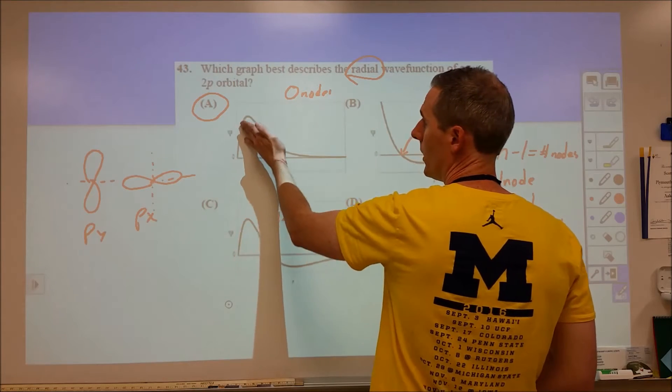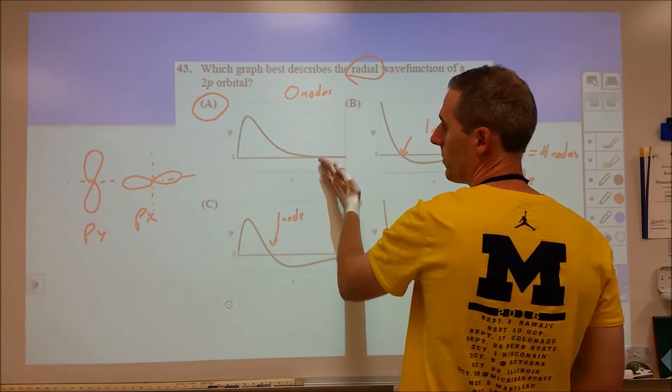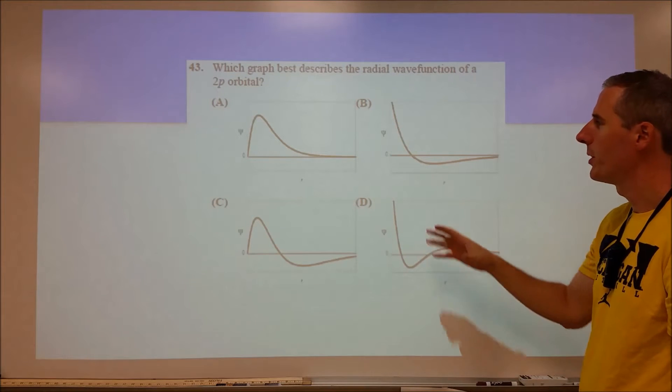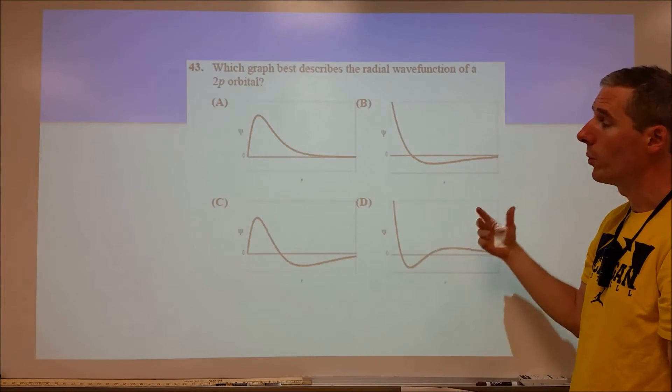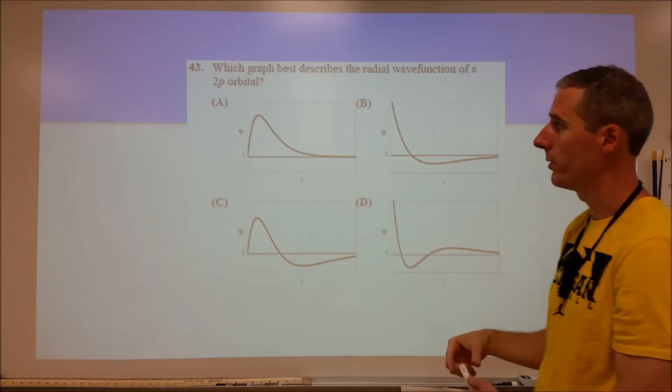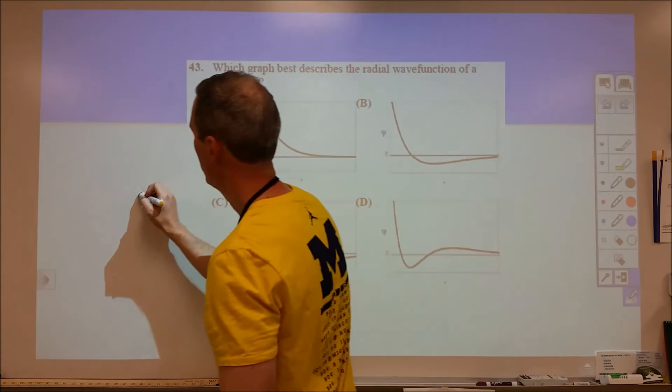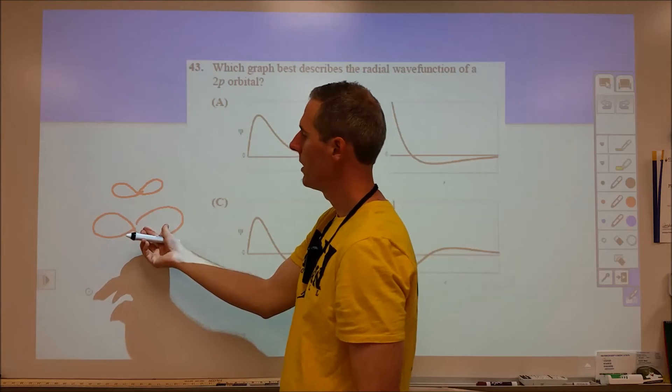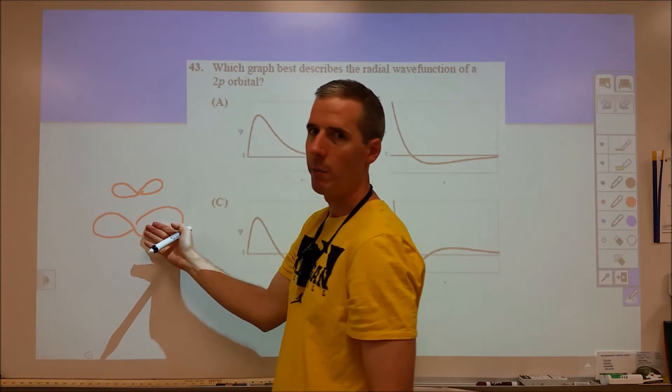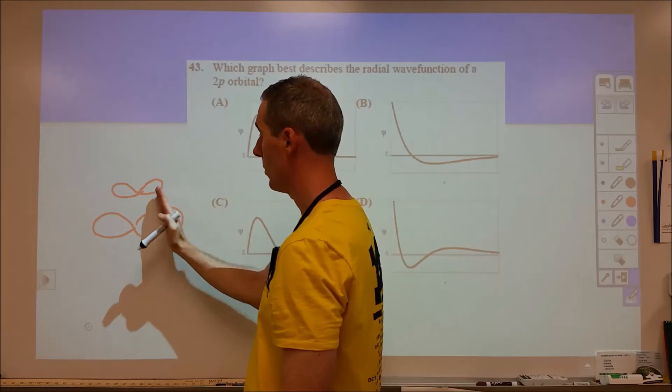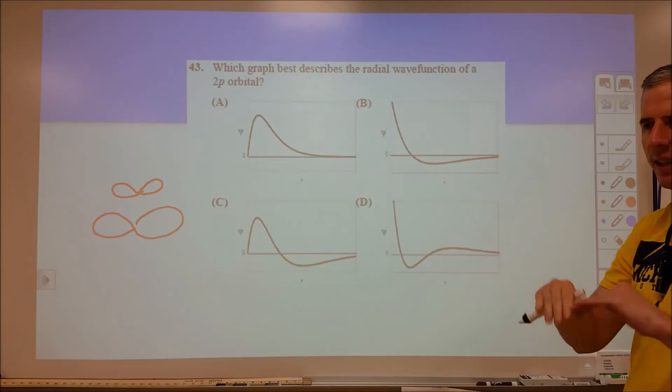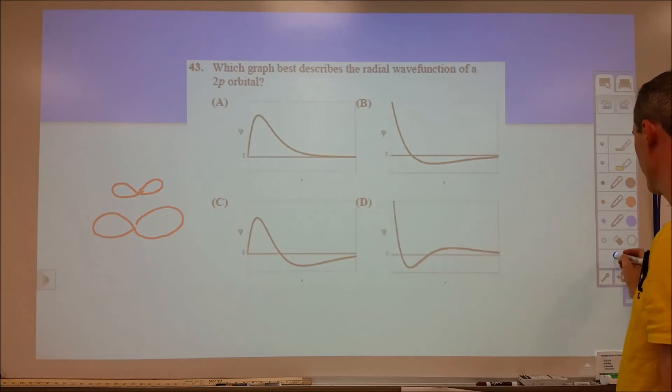If you go with a 3p orbital, we would have that angular and radial node. In a 3p orbital, here's a 2p and here's a 3p, as you move out there is a point where there would be no electron density within this structure. You would see that in a graphical representation, but you can't see it in any kind of containment sense.